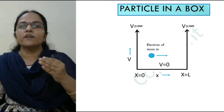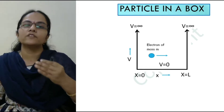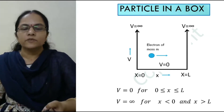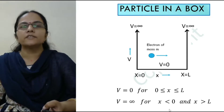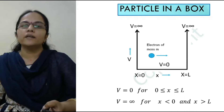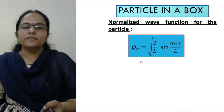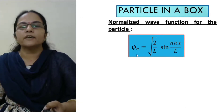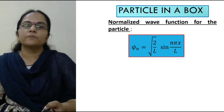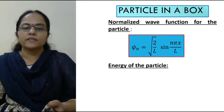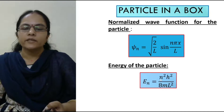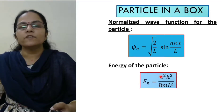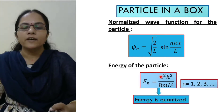Now we will see the values of these wave functions and energies for different values of n. The potential V is zero for x lying between 0 and L, and it is infinity for x less than zero and x greater than L. The normalized wave function is ψn equals square root of 2 by L times sin(nπx/L), and the energy is En equals n² h² by 8mL².